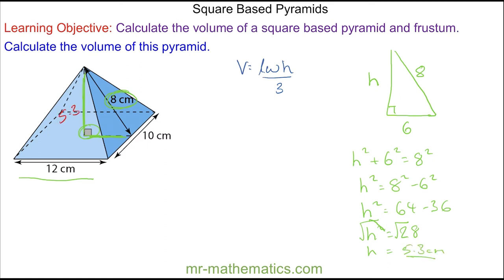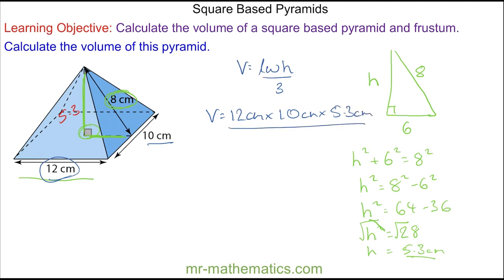So now I can put these values back into our formula. The volume is the length, which is 12 centimeters, multiplied by the width, which is 10 centimeters, multiplied by the perpendicular height, which we found as 5.3 centimeters, divided by three.